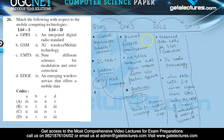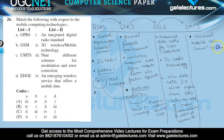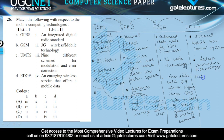Then UMTS technology was launched. The full form of UMTS is Universal Mobile Telecommunication System. UMTS is the enhanced version of EDGE technology and is the latest commercially available technology that mobile phones use today.